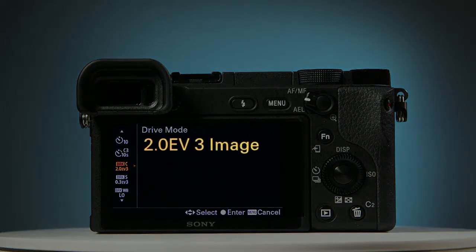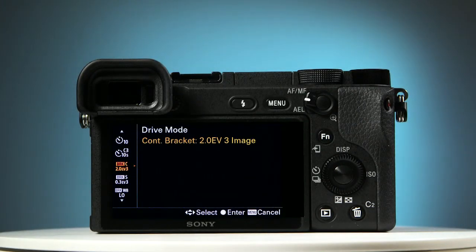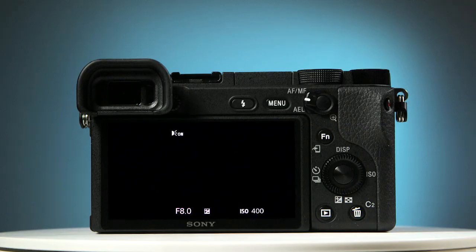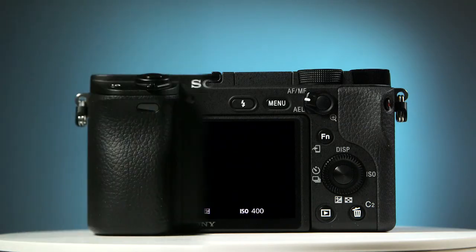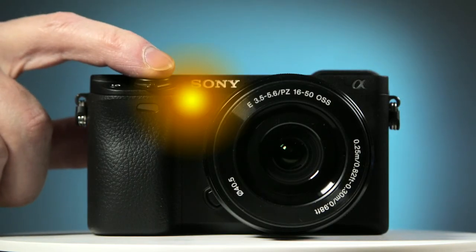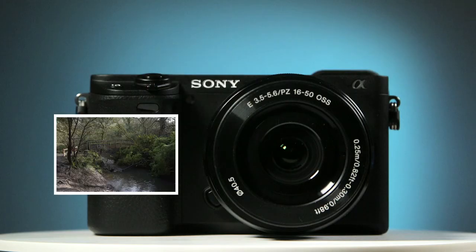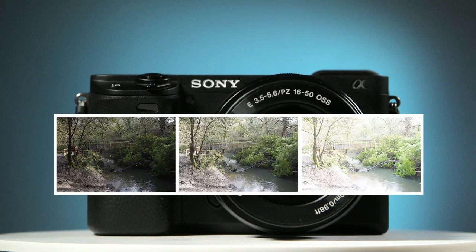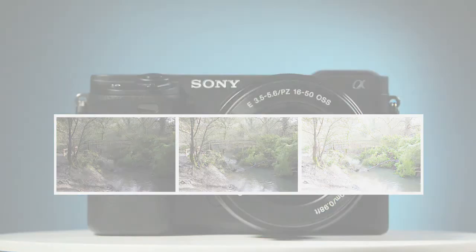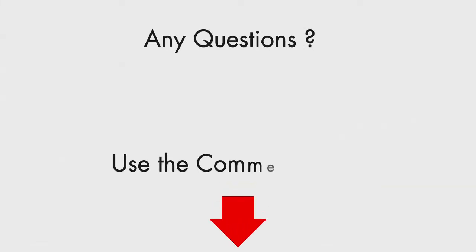What I've chosen here are three photographs at a two-EV spacing. Save your choice by pressing the center button. All you need to do now is to keep the camera still, press the shutter button, and the timer will count down, and your photos will be taken. If you have any questions about what's shown in this video, just ask them in the comments below.